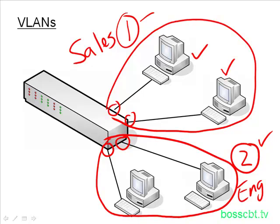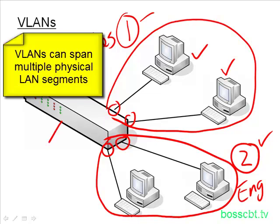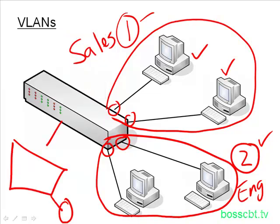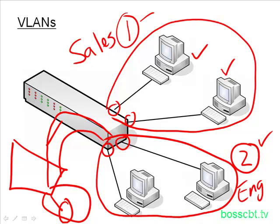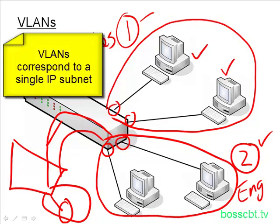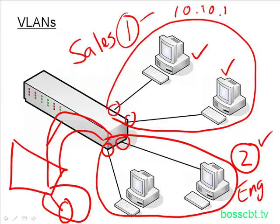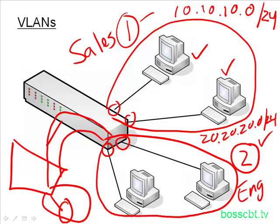VLANs can span multiple LAN segments. If our network was big and we had another switch with another PC, VLAN2 could live over there as well — the VLAN can become extended. So VLANs can span multiple switches. Also, because a VLAN is associated with a single broadcast domain, it's associated with a single IP subnet. Each VLAN uses different subnet numbers and different IPs — on top perhaps we have 10.10.10.0/24, and on the bottom we have 20.20.20.0/24. So on a Layer 3 level, VLANs help us segment as well.